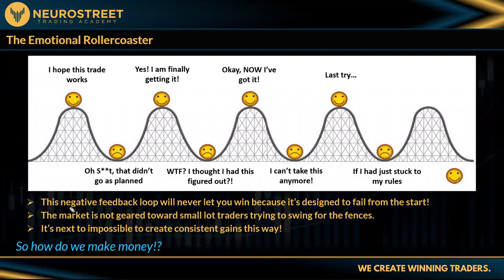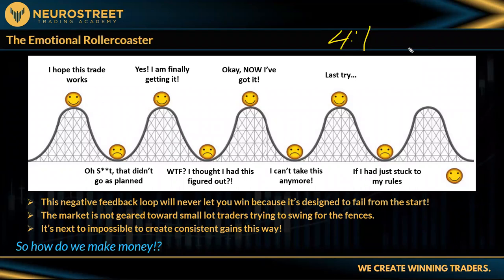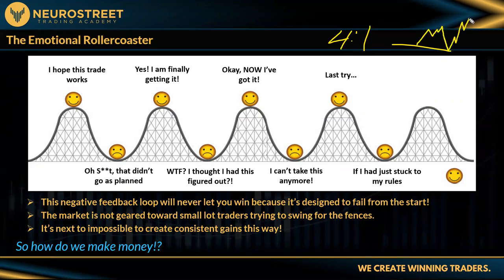The negative feedback loop will never let you win because it's designed to fail from the start. The market is not geared toward small-lot traders trying to swing for the fences. If you're trying to trade four-to-one in futures, you'll be taking very few trades and getting a lot more stop-outs because your stop has to be really tight. You need to get in, know where you're getting out, and just get out — don't sit there losing your mind as the trade goes up, comes back down, and whipsaws around before finally hitting target.